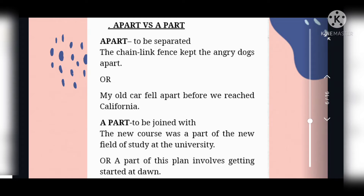The next difference is between 'apart' and 'a part'. 'Apart' means to be separated. For example: The chain link fence kept the angry dogs apart. Another example: My old car fell apart before we reached California. The second, 'a part', means to be joined with. For example: The new course was a part of the new field of study at the university. Another example: A part of this plan involves getting started at dawn.